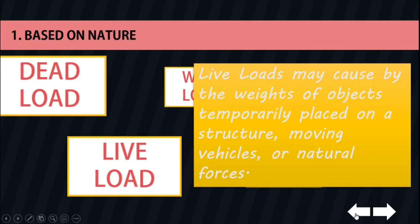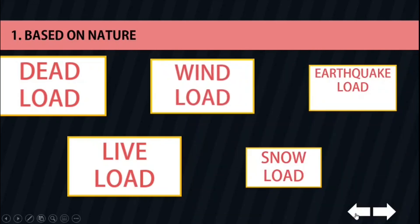Live loads may be caused by the weights of objects temporarily placed on a structure, moving vehicles, or natural forces. The minimum live loads specified in codes are determined from studying the history of their effects on existing structures. Usually these loads include additional protection against excessive deflection or sudden overload. The third one on our list is the wind load.